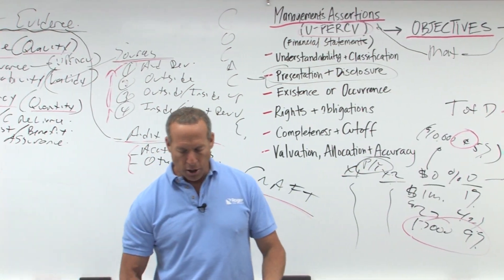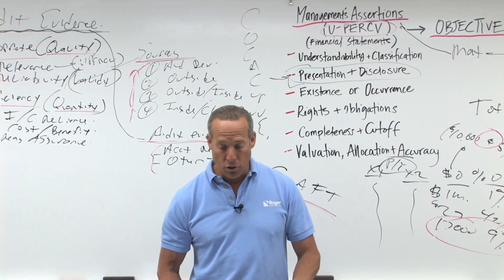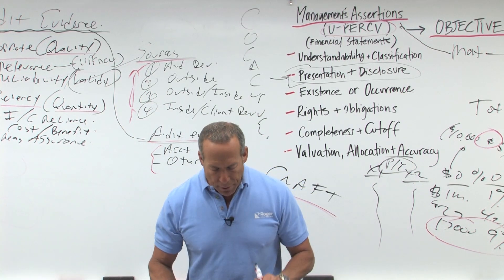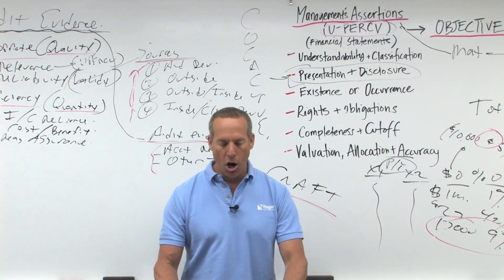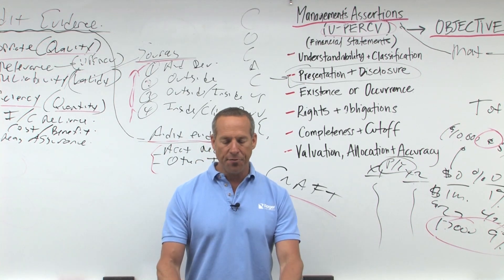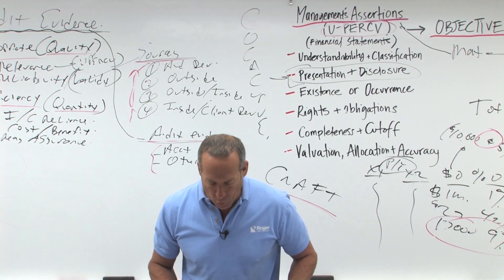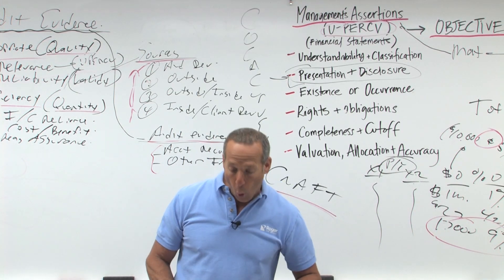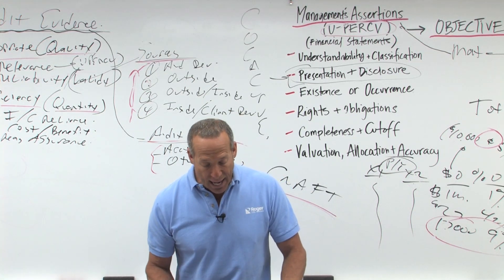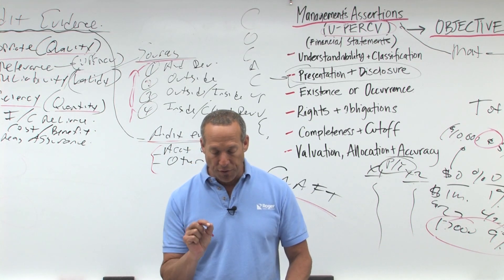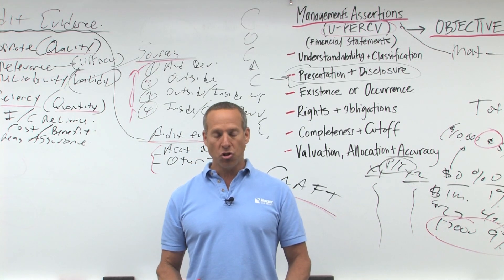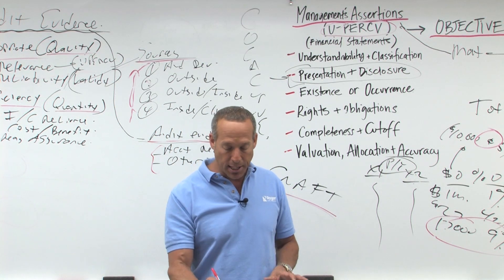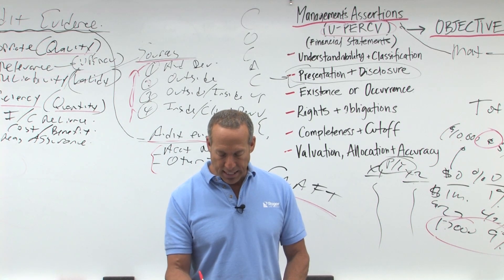The auditor should complete four steps in using it as a substantive test. First, determine the suitability of particular substantive analytic procedures for given assertions. Then evaluate the reliability of data from which the auditor's expectation is developed. Develop an expectation for a recorded amount or ratio and evaluate whether it is adequately precise to identify a misstatement. And then determine the amount of the discrepancy between the recorded amount or ratio and the auditor's expectation that would not require further investigation.